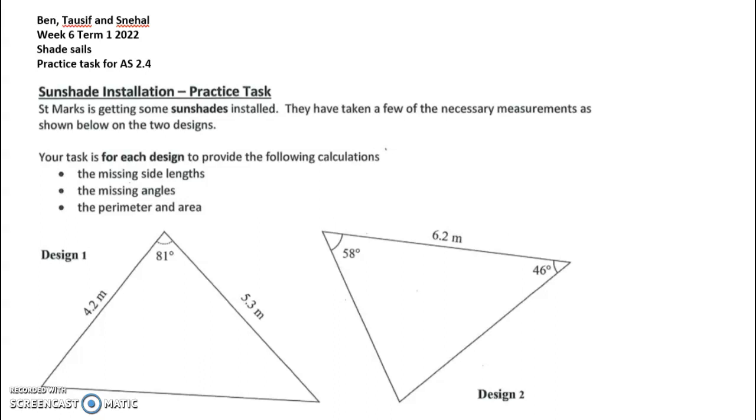St Mark's is getting some new sunshades installed and they've taken some measurements as shown on the two designs. Your task is for each design to provide the following calculations: find all the missing lengths, angles, and the perimeter and area.